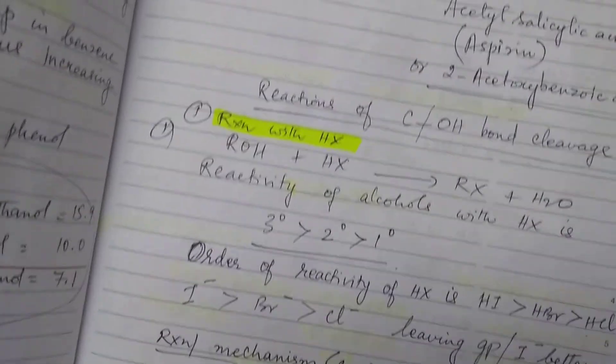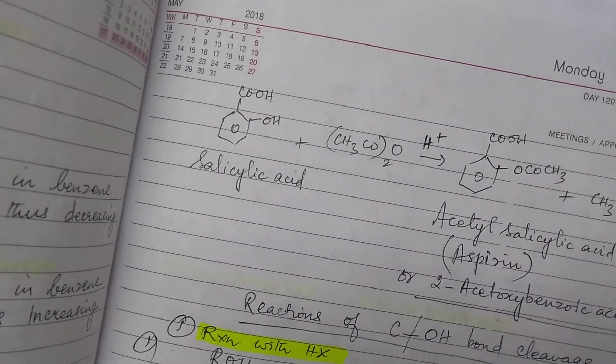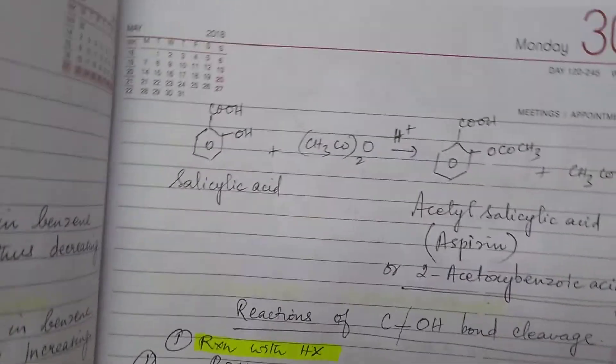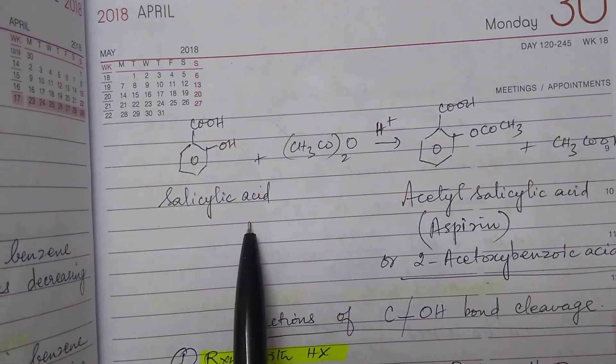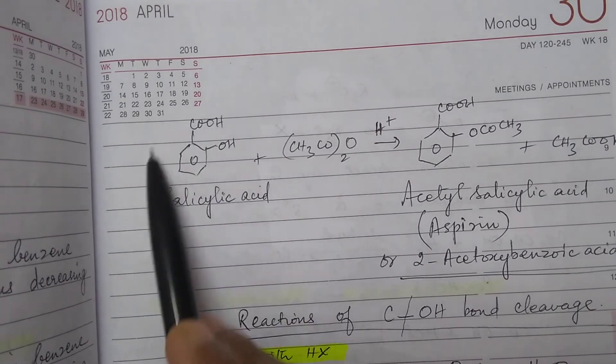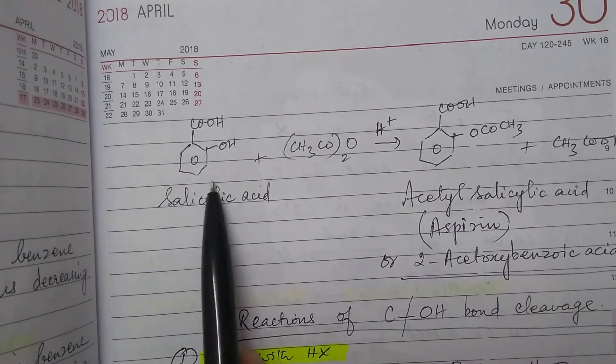Now a very important reaction based on this esterification is the formation of aspirin. Salicylic acid is 2-hydroxybenzoic acid. It is called salicylic acid.